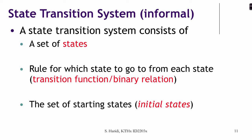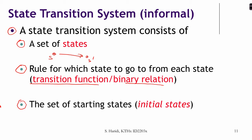We are going to talk about state transition systems. Informally, a state transition system consists of a set of states and a rule that governs how you move from one state to the next. This is called a binary relation between states, but if you can only move from one state to a single next state, it is also a function — a transition function. We also have a set of initial states where the system starts.